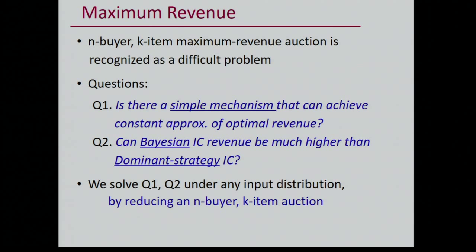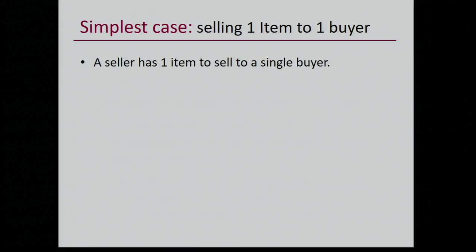We made progress by introducing a particular way of reducing an N-buyer multi-item auction into N disjoint one-buyer K-item auctions. The results in this paper were presented earlier in the year at the STOC conference. Let's start with some background.